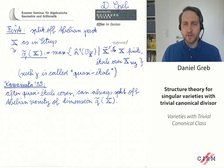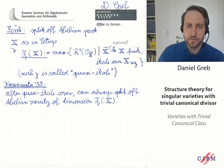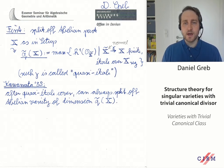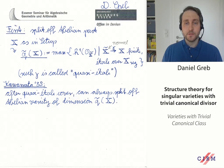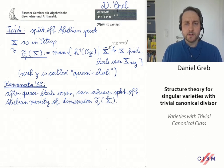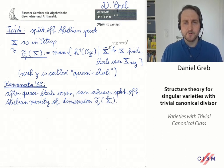For smooth X, these quasi-étale covers don't exist. But in the singular case, they play a really important role in the structure theory, and we call such a map a quasi-étale cover. You might be scared by this maximum, because a priori it might go up to infinity. But part of the theorem of Kawamata — proven in 1985 — is that this invariant is finite for X as in the setup.